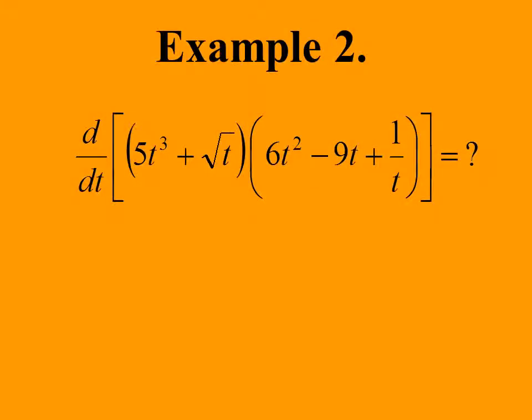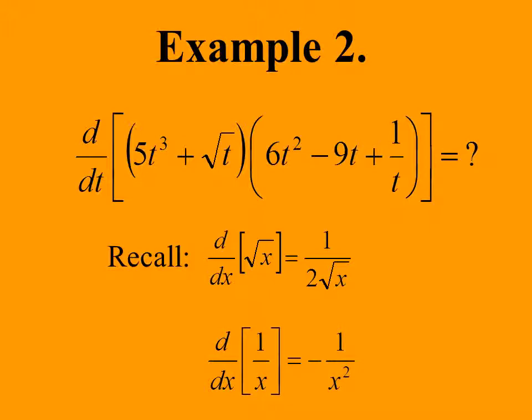Consider the product of 5t³ + √t and 6t² − 9t + 1/t. This involves two functions which are not polynomials, but we have seen them before. We must recall that the derivative of √x is 1/(2√x), and the derivative of 1/x is −1/x². Note that example 2 involves functions of t, not x; however, this does not matter, and we can simply replace the x's with t's to get the needed derivatives.